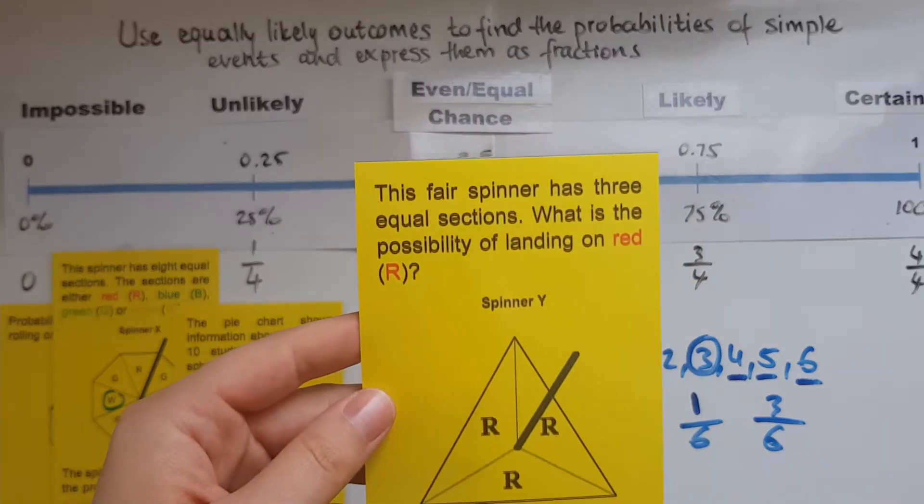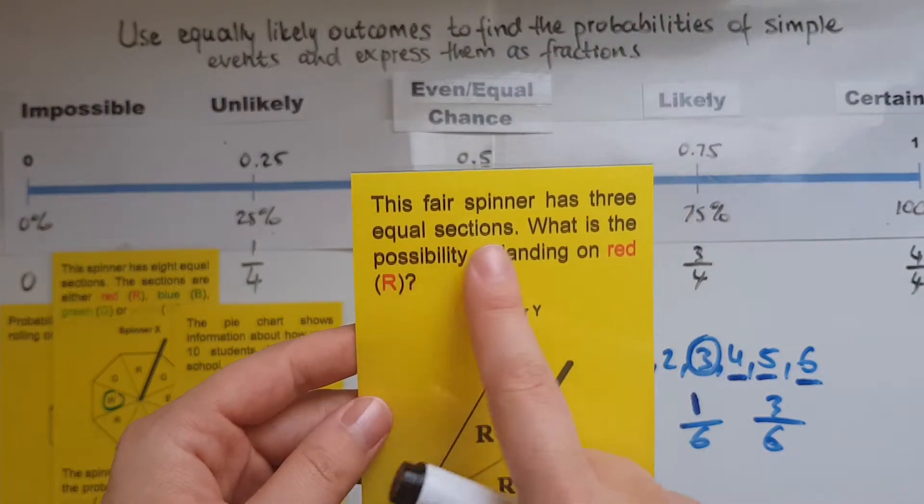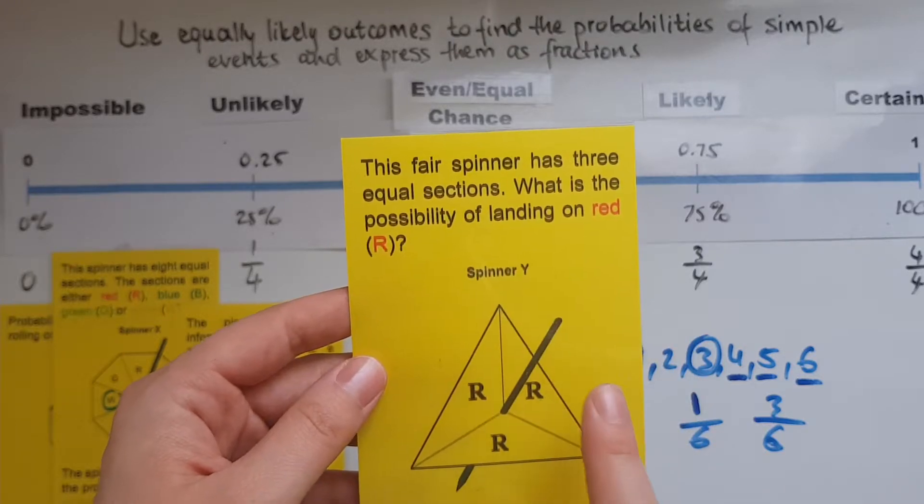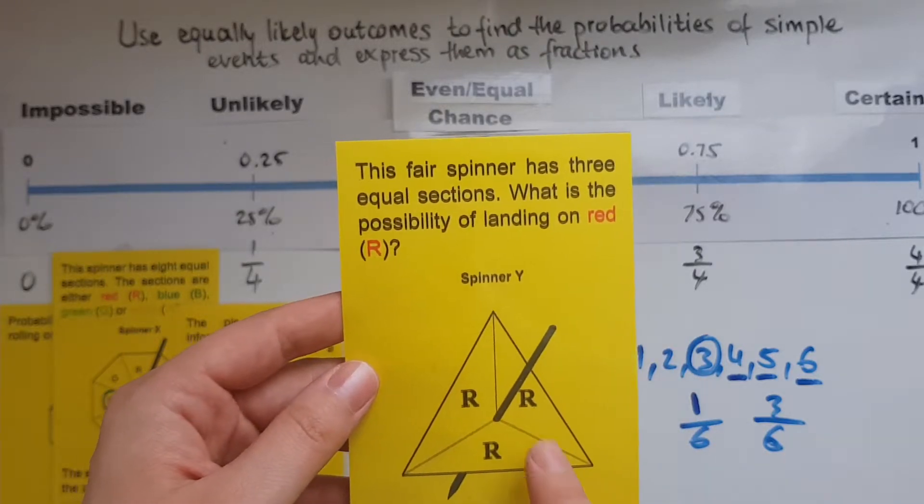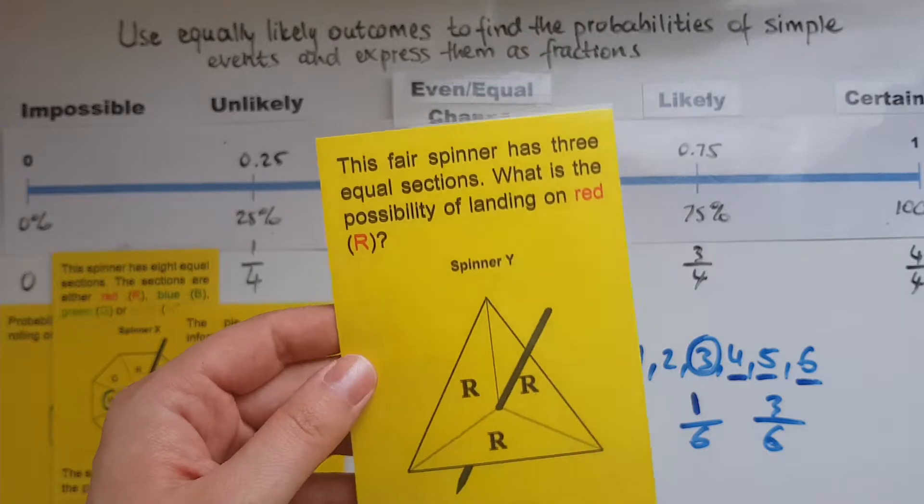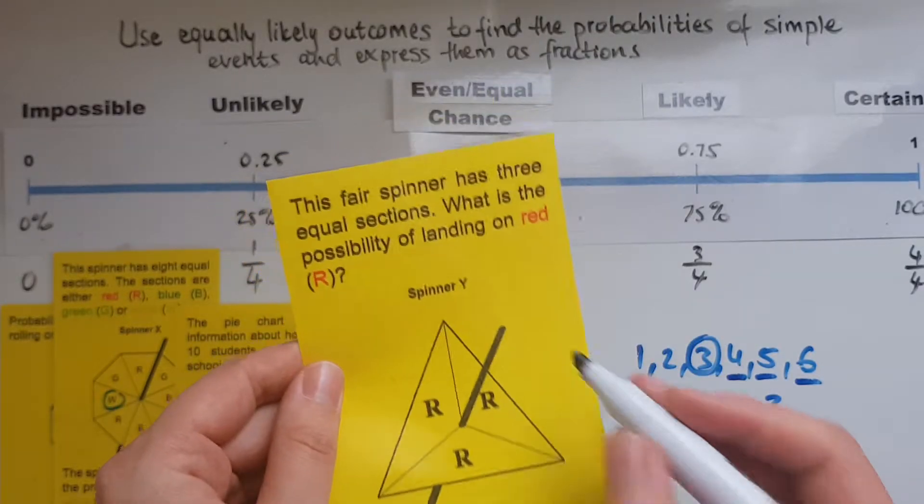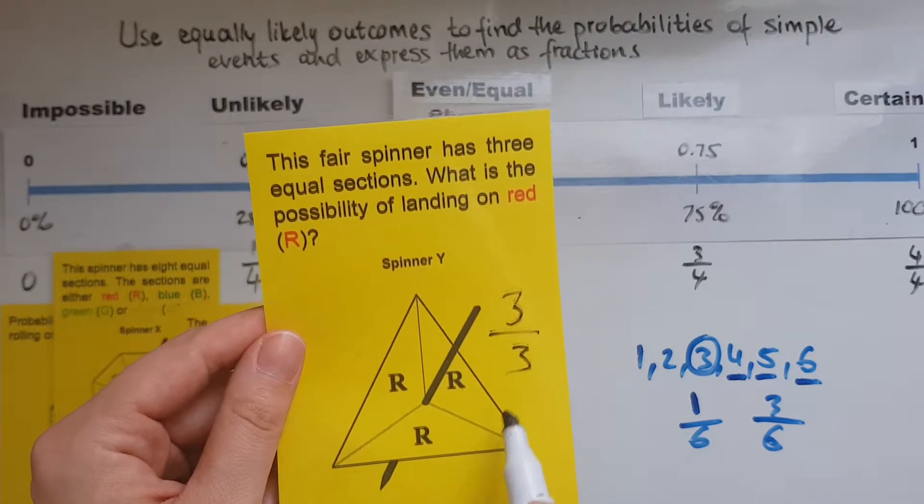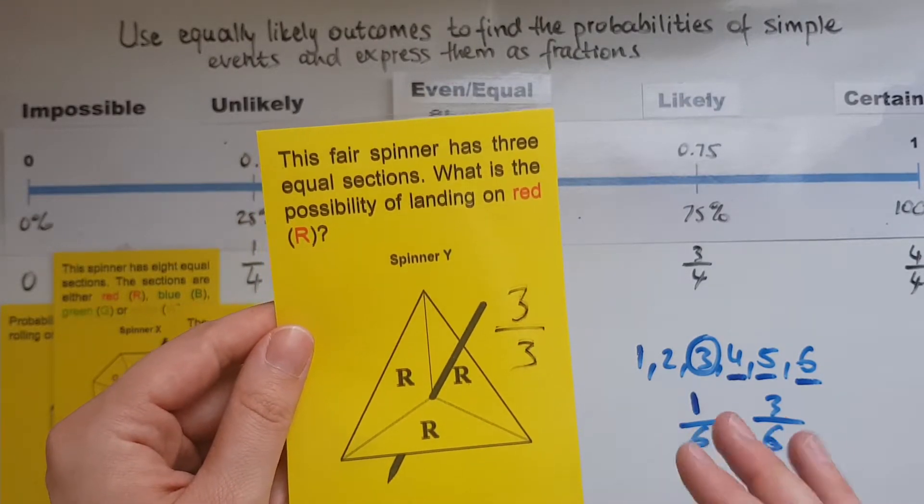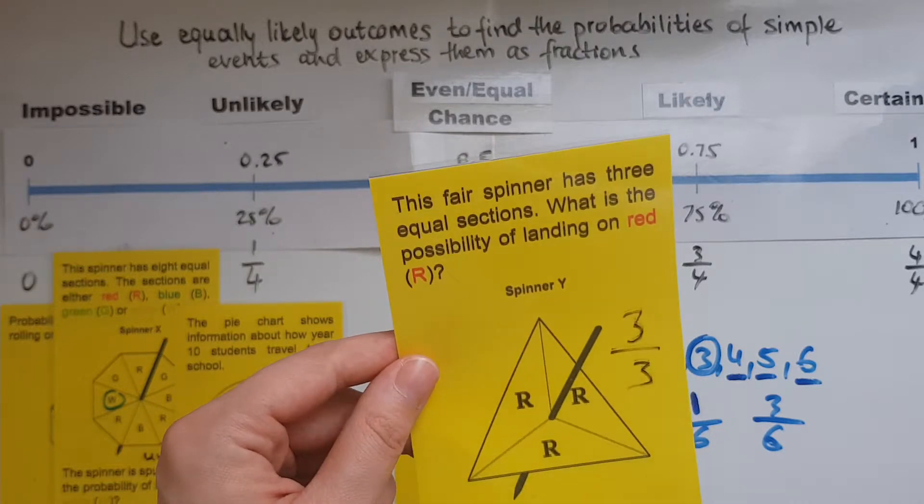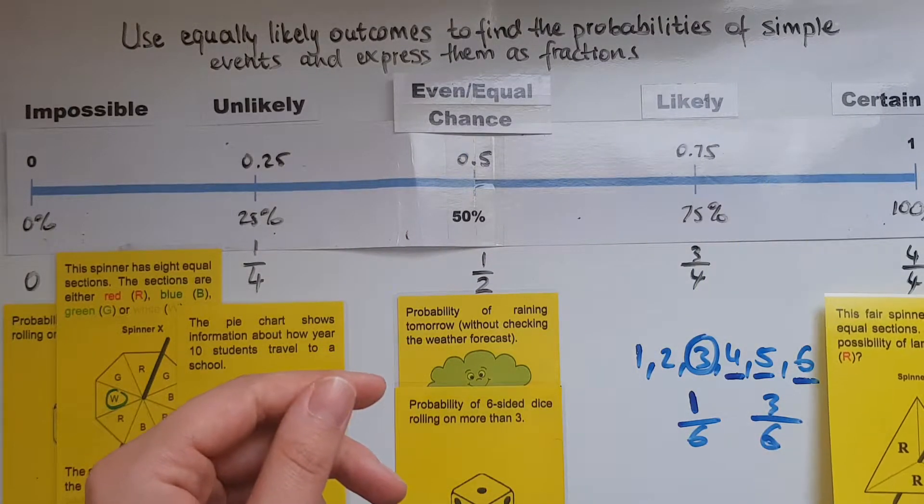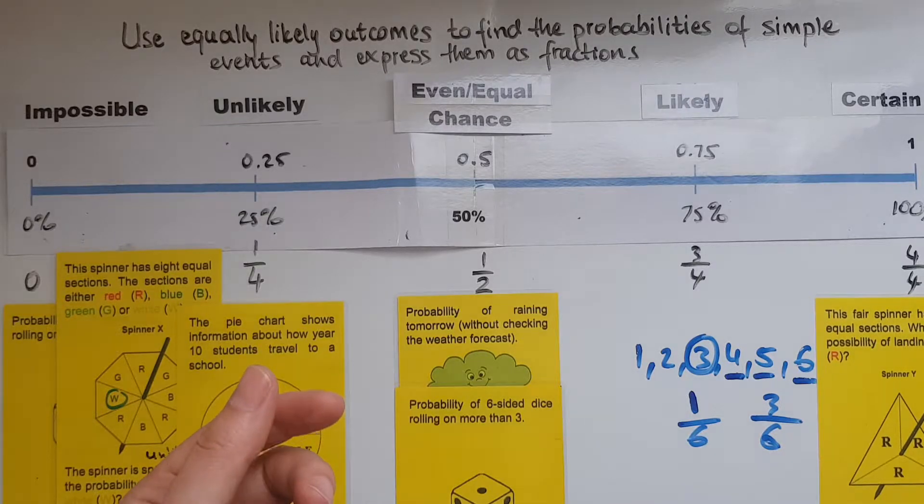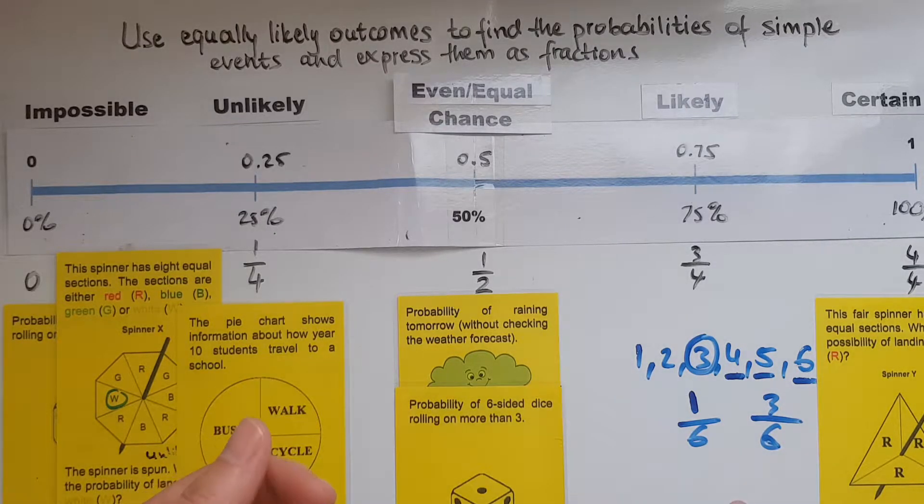We look at this event which says this fair spinner has three equal sections. What is the possibility of landing on red? So we said they were all red and for that reason the fraction would be three out of three because there are three possible and all three of them are red which made it certain. The probability of this happening or the likeliness of this happening is certain. The probability is three over three or a whole or one.